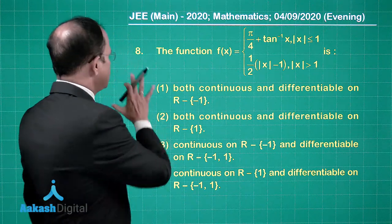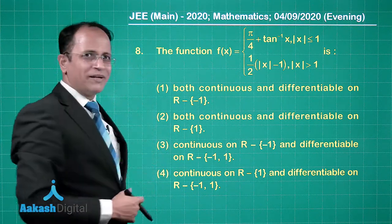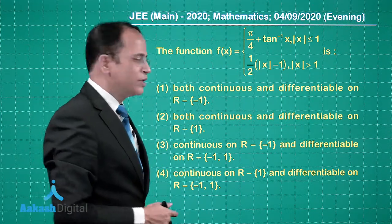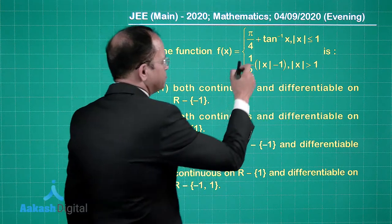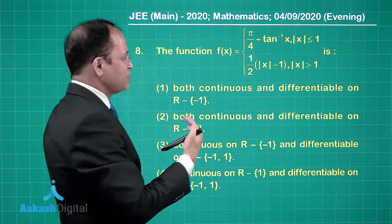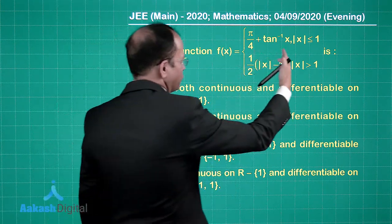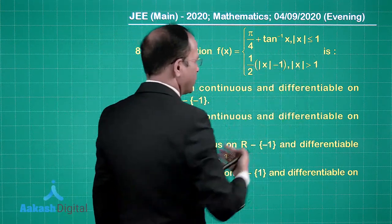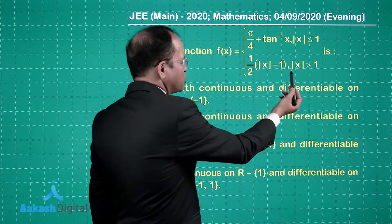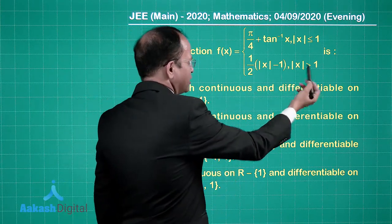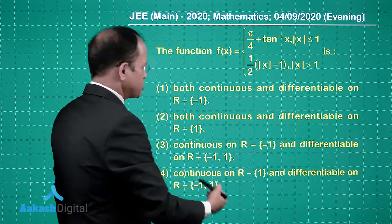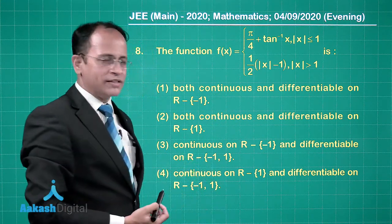Let us start with problem question number 8, a very interesting problem. f(x) is given as pi/4 plus tan inverse x where mod of x is less than or equal to 1, and half of mod of x minus 1 where mod x is greater than 1. We have to check all four given options.